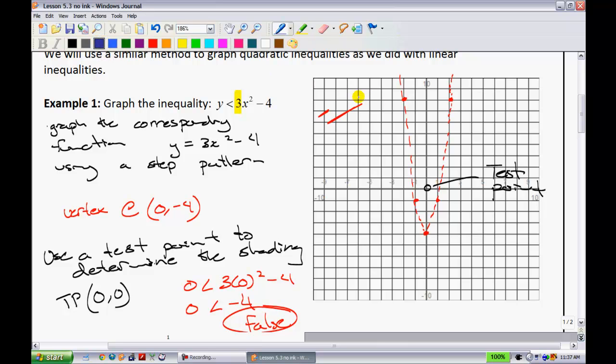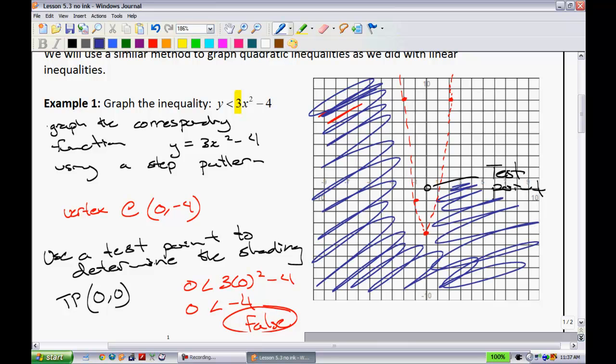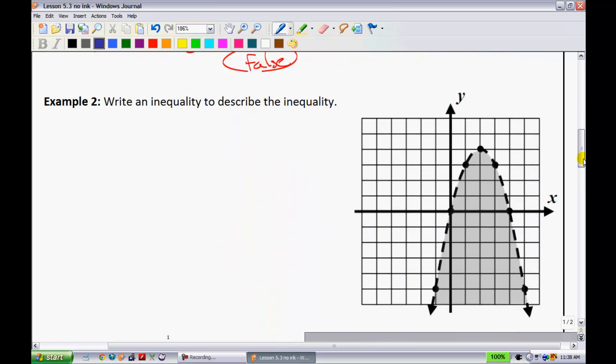So using test point 0,0, let's put it into the original equation. We would have 0 is less than 3 times 0 squared minus 4. This just simplifies to 0 is less than negative 4. Well, 0 isn't less than negative 4. It is greater than negative 4, so this would be false. Now recall, when it's false, what that means is that you shade away from the test point, basically wherever the test point is not. So since the test point is inside right here, we're going to shade on the outside. So we would be shading this region like so. So what that means is if you picked any one of those points and you put it into the inequality right there, it would satisfy. Anything inside in this region right here would not.